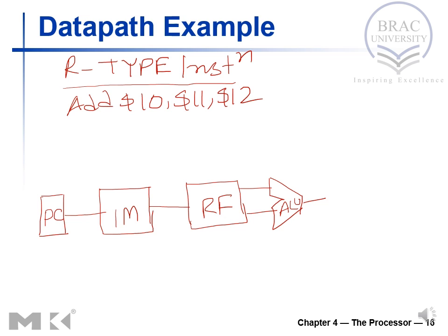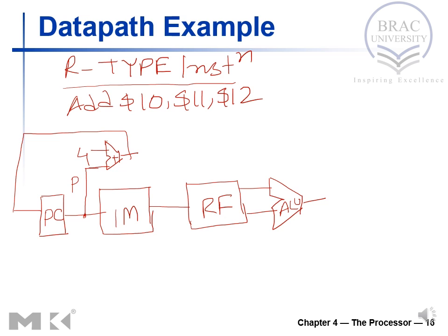We also need an adder — the symbol for the adder and ALU are almost similar. One connection comes from here with a constant 4, so this is our adder. This link carries the value inside the PC, and then goes to instruction memory, giving us PC plus 4.